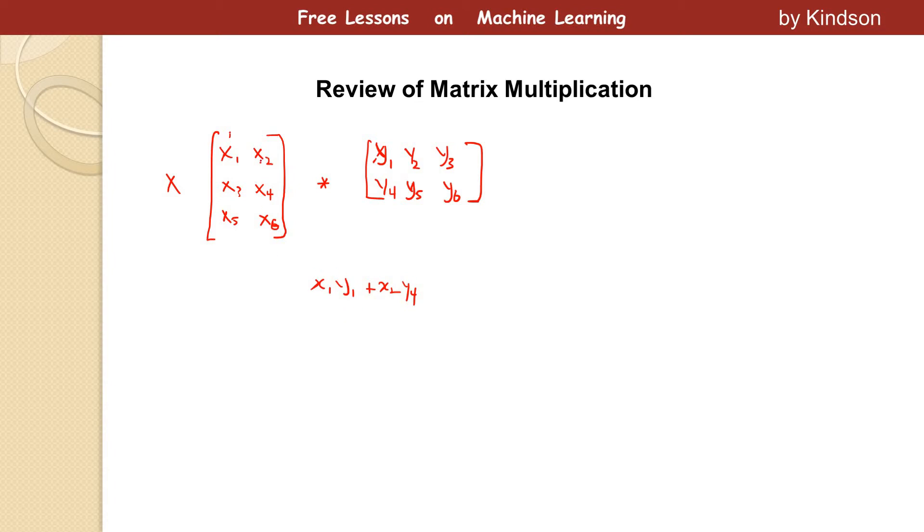So this is what we have in the first row. So we take this, we have also x3, y1 plus x4, y4. So this is the next item on the row.